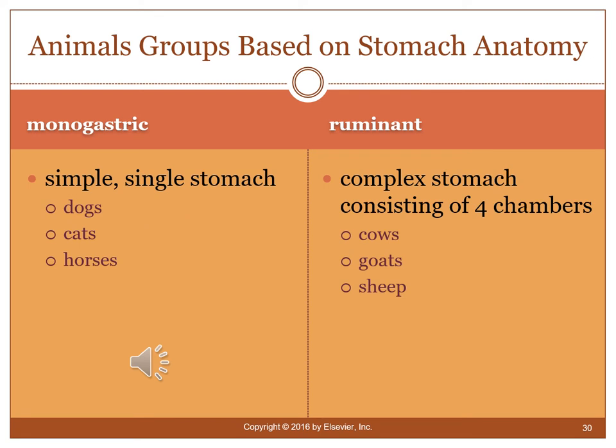Animal groups differ based on stomach anatomy. Monogastric animals — dogs, cats, and horses — have a single stomach. Ruminants such as cows, goats, and sheep have a complex stomach consisting of four compartments. The first three are sometimes called the forestomachs — an unfortunately confusing name — and the fourth is the true stomach. The term 'fore' here means 'before' or 'head,' not the number four.